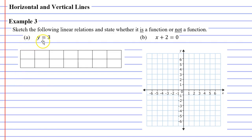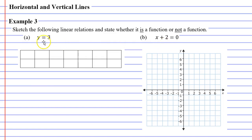We are told that y equals 3. You might notice that our equations are quite different this time because usually we have two variables, y and x, but in each equation we only have one variable. So what do you do in a situation where it just says y equals 3?